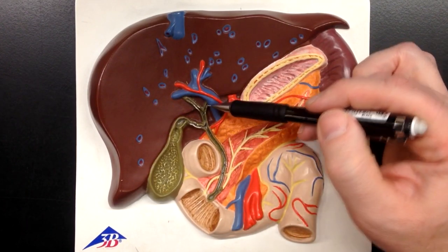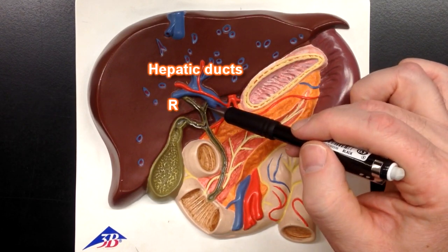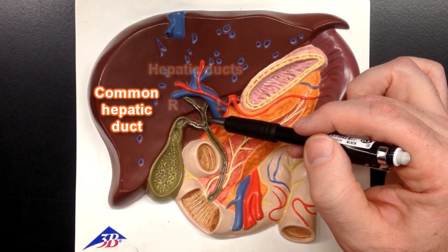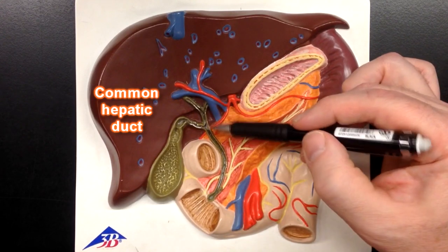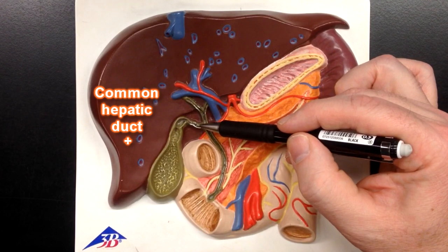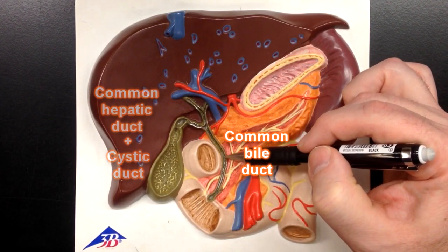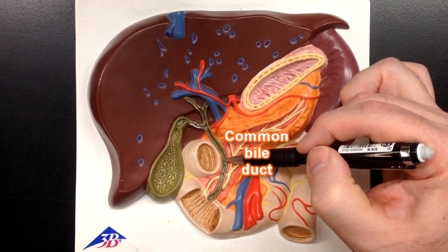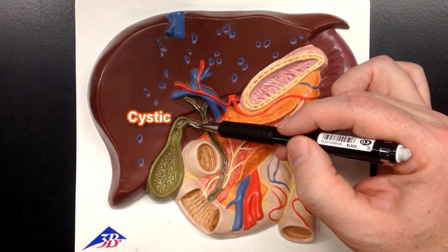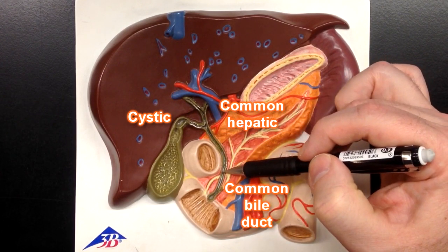These ducts up here would be hepatic ducts. This would be the right hepatic duct and the left hepatic duct coming together to form the common hepatic duct. The common hepatic duct plus the cystic duct is going to form the common bile duct, and that's what this duct is right here. So cystic duct and common hepatic duct form the common bile duct.